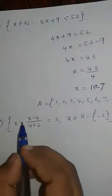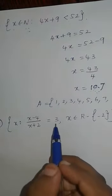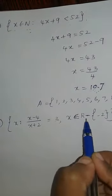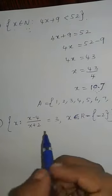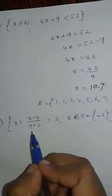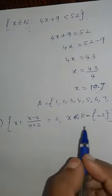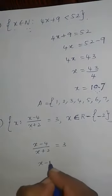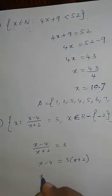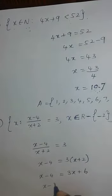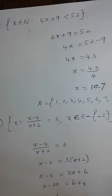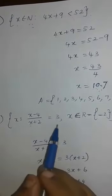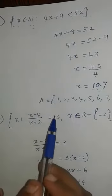Fourth subdivision: X is such that X minus 4 divided by X plus 2 equals 3, with the condition X belongs to R minus {-2}. This means X belongs to the real numbers but we exclude minus 2, because substituting minus 2 makes the denominator zero. Solving: X minus 4 equals 3 times (X plus 2), so X minus 4 equals 3X plus 6, giving minus 2X equals 10, therefore X equals minus 5.